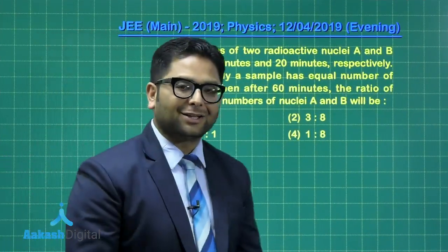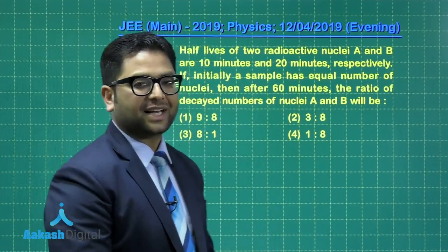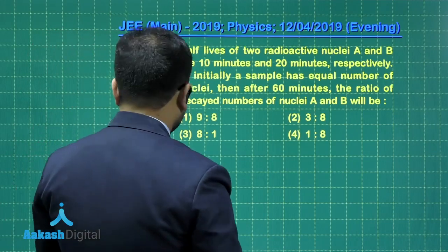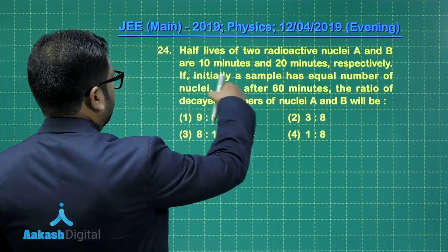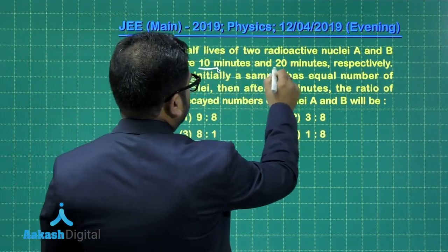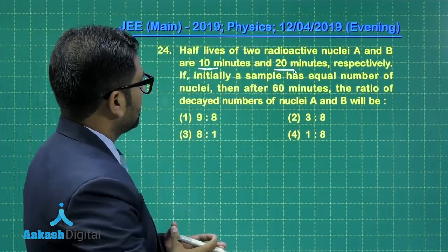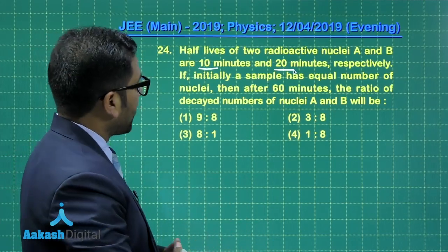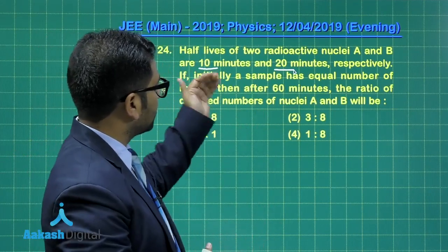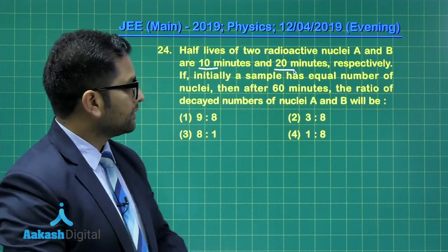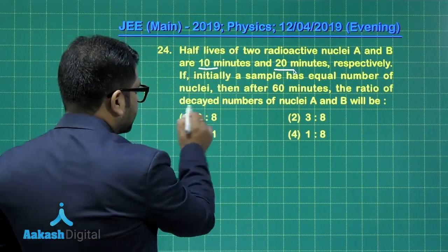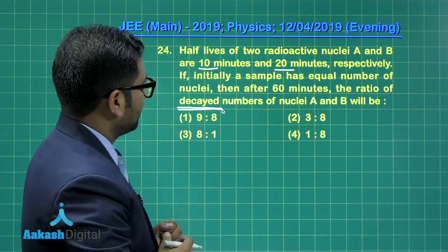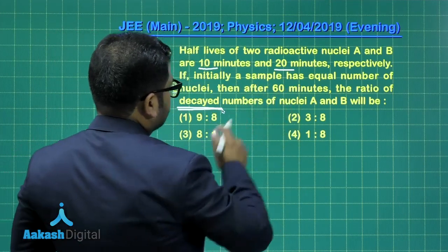Okay, 24, another from modern physics, but this time nucleus, and more specifically radioactivity. Half-lives of two radioactive nuclei A and B. The first one is 10 minutes, the second one is 20 minutes. If initially a sample has equal number of nuclei, then after 60 minutes, I think that can be easily related. Six half-lives, three half-lives. The ratio of decayed, now this is a bit tricky, the decayed one we need to calculate. Let's see. After six half-lives, the number of nuclei remaining would be N0 divided by two raised to the power six, and that's going to be 64.